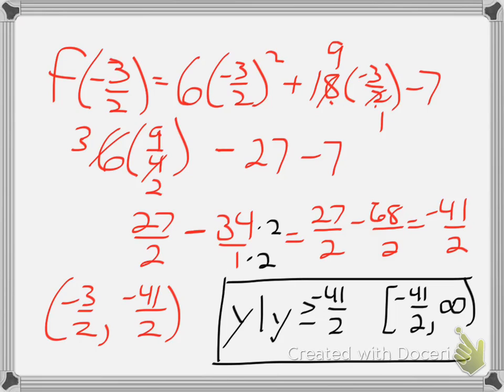So again, to find the domain of a quadratic function, we can assume that it's all reals, since it is a quadratic function, a parabola. To find the range, we identify the minimum or maximum point by using the vertex formula. Using the y value, we then determine the appropriate range based on whether the graph opens up or opens down.